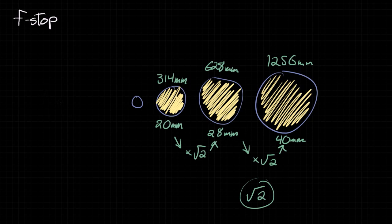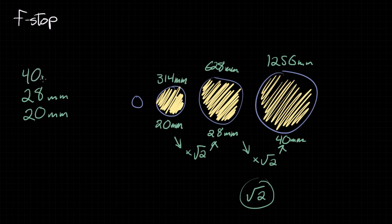So remember, the f-stop scale is a way to talk about the amount of light coming in with regard to the size of the aperture. Why don't we just make a scale of aperture sizes and say, if you want a certain amount of light, just open your aperture to 40 millimeters? Well, the reason is that not all lenses are the same. The same aperture size is going to let in different amounts of light depending on the lens you use.